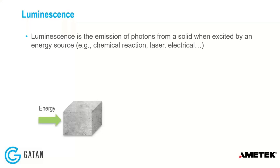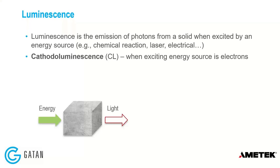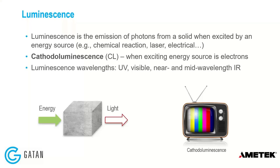To begin, I'm just going to refresh on what cathodoluminescence is. Luminescence is the emission of photons from a solid when excited by an energy source. There are lots of different ways to excite light from materials — photoluminescence and electroluminescence are examples. Basically, we introduce energy into a material and get light out. Cathodoluminescence is when the excitation source is an electron beam, which most of you are probably familiar with from cathode ray tube televisions, or CRTs.